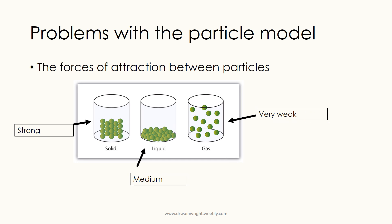The second problem is that particle diagrams don't show the forces of attraction between the particles. In a solid, there are very strong forces of attraction between the particles because they're very close to each other. When you melt a substance and turn it into a liquid, the energy you put in overcomes these forces of attraction. In a liquid, you've overcome some of those forces, so there are still forces of attraction present, but they're of medium strength — not as strong as in a solid, but much stronger than in a gas.